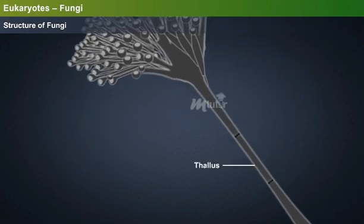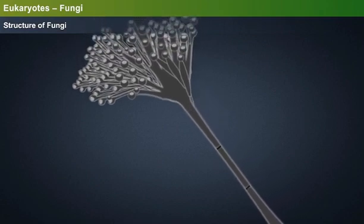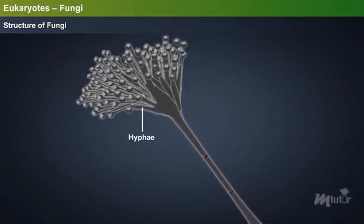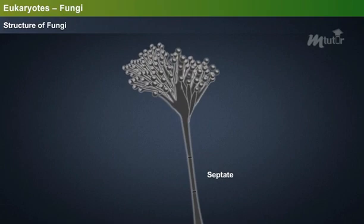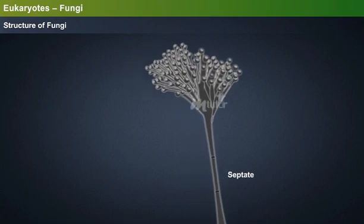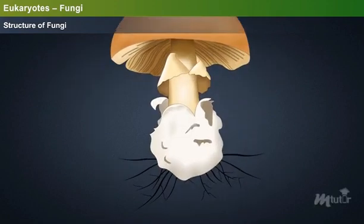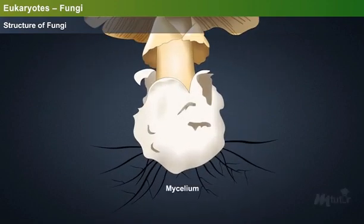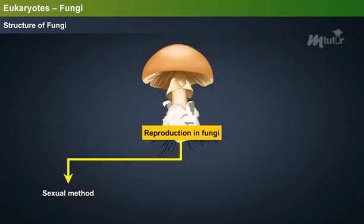The body of the fungus is called thallus. The plant body thallus contains long filamentous portions called hyphae, which are divided into several compartments by septa. Fungus may be septate, that is having cross walls, or aseptate, that is without cross walls. A mass of hyphae is collectively called mycelium.